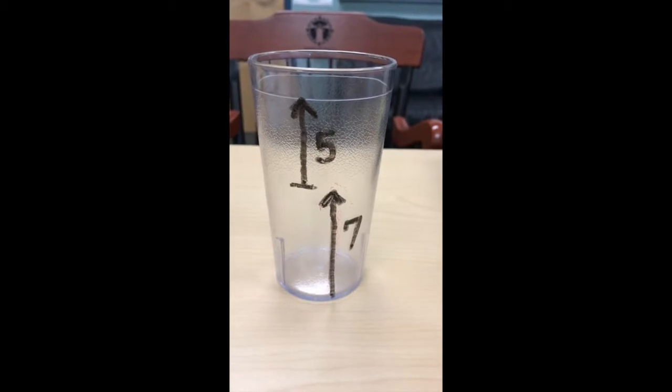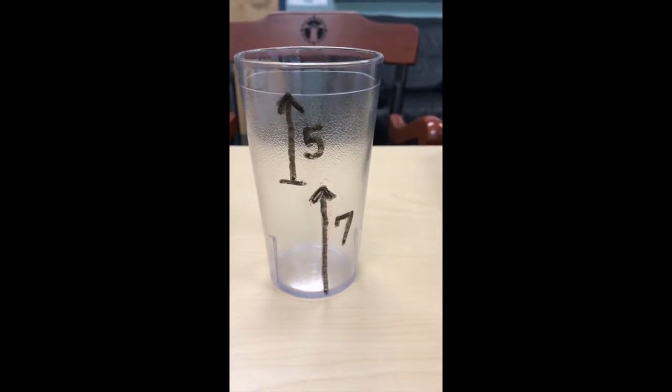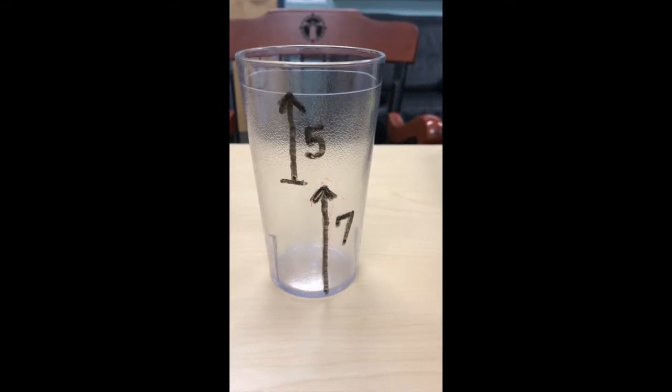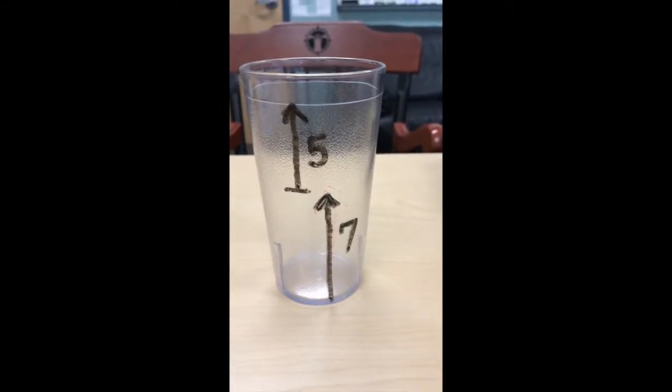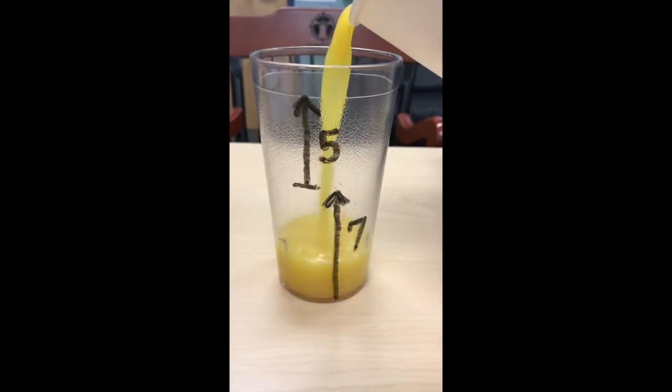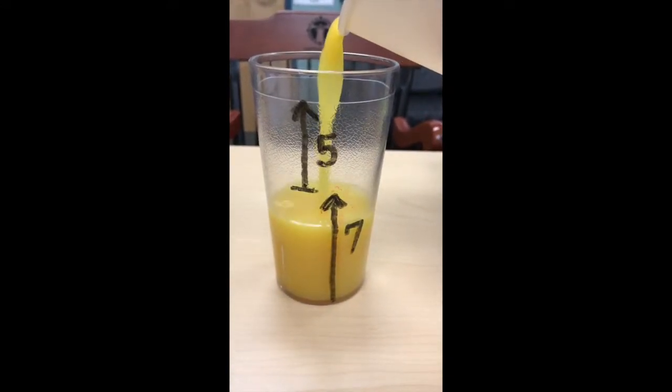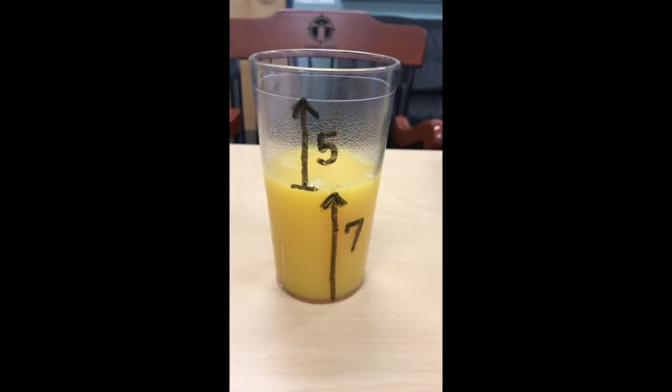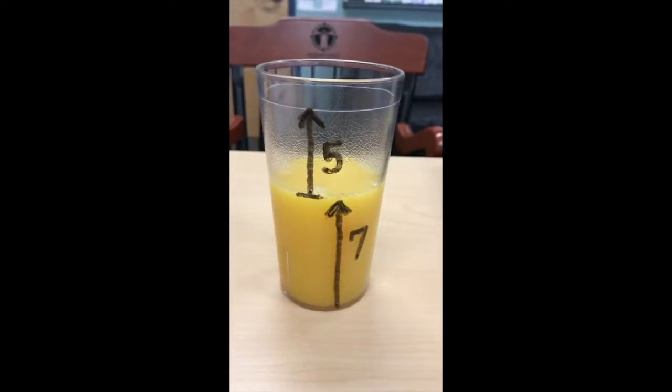I'm going to use this glass and some juice to illustrate the linear diagram for addition. I'm going to start by adding 7 ounces of juice to this glass. Now I'm going to add 5 more.